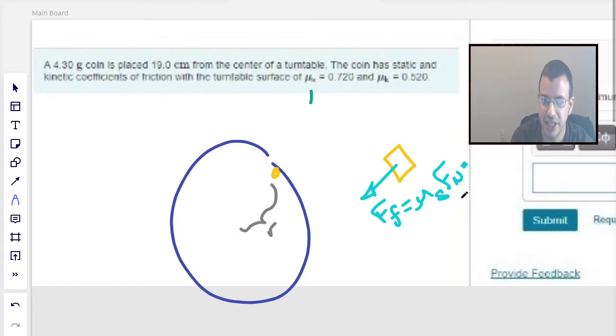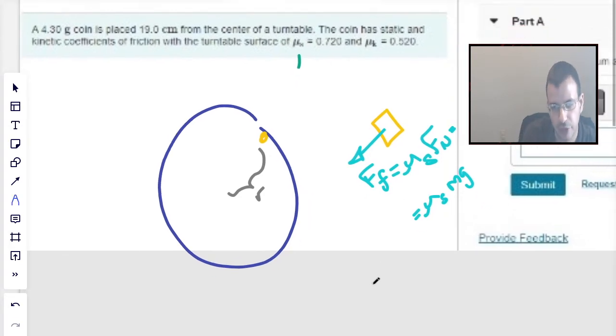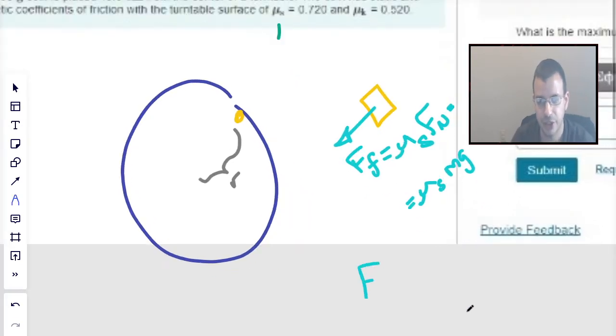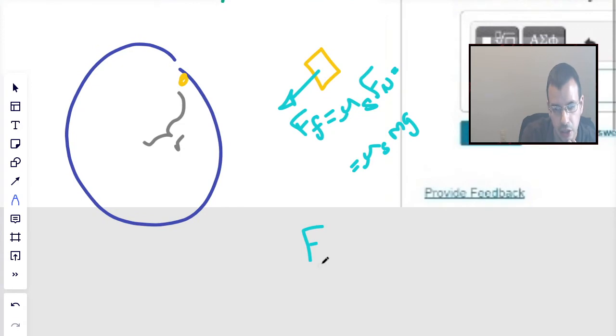And the force normal in this case is going to be mass times gravity. Alright, so now I'm going to rewrite this a little bit more plainly so we can solve it. Force friction is going to be coefficient of static friction times mass times gravity, because that is what's holding it on.